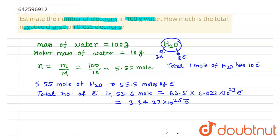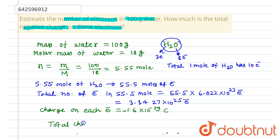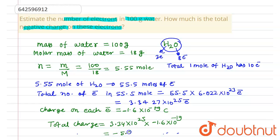The charge on each electron is -1.6 × 10⁻¹⁹ coulombs. So the total charge equals 3.34 × 10²⁵ × (-1.6 × 10⁻¹⁹), which equals -5.348 × 10⁶ coulombs. This is the answer to this problem.